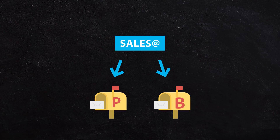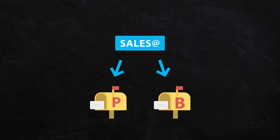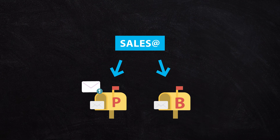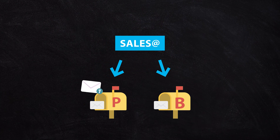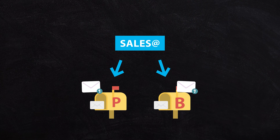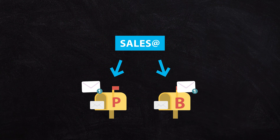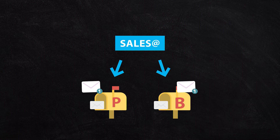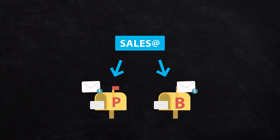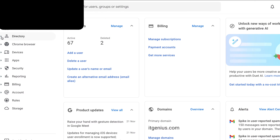Let's say I want sales@ to automatically go to Peter and to Bob. If we use the distribution group method, it's automatically going to place a copy of that email in Peter's mailbox and a copy in Bob's mailbox. Setting up a distribution group inside Gmail is pretty straightforward — we go to our admin panel, then the groups service, so Directory and then Groups.